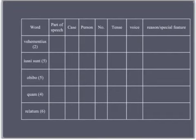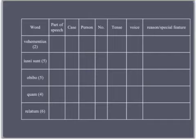Turning to page 105 in your books, you will find 'The Death of Cicero' with various words highlighted as examples for our syntax chart. The first word is 'vehementius.' The sentence reads: no one had attacked Antony more violently than Cicero. Vehementius — what part of speech is it? It is an adverb. The reason or special feature is comparative — it is a comparative adverb because it ends with -ius. None of the other boxes need to be filled out, and we get the marks for that.